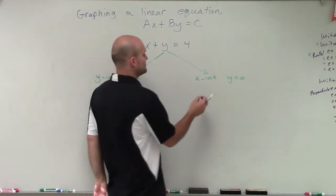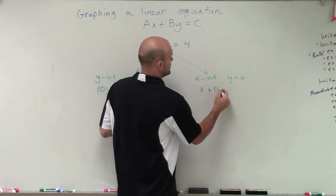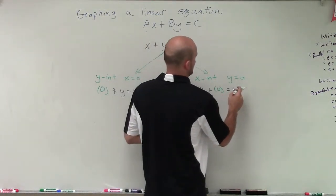And then to solve for the x-intercept, I'll have x plus 0 in for y equals 4.